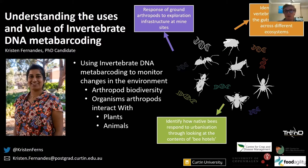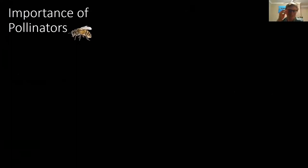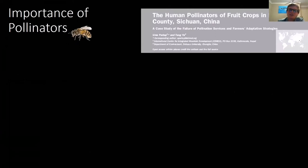Before launching into avocados and eDNA, I want to provide a case study of why pollinators are so important. This paper — 'Human pollinators of a fruit crop in Maozen County, China' by Partap and Yar — surveyed the region in 2001 and 2011. Human pollinators had been used since the 1980s because four decades of insecticide use — applied eight times a year — had decimated the local insect population.